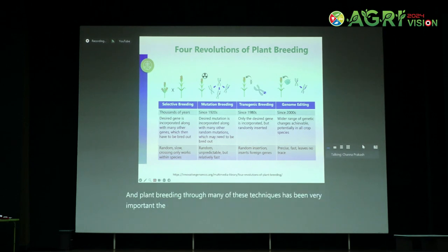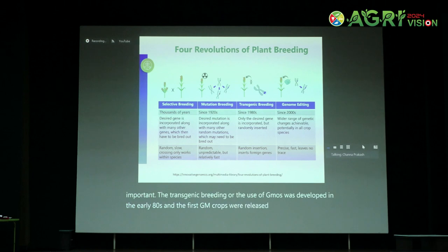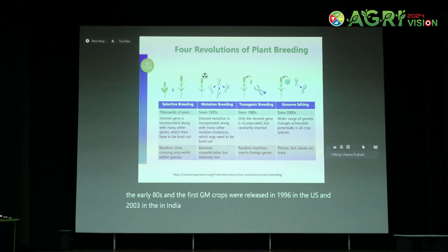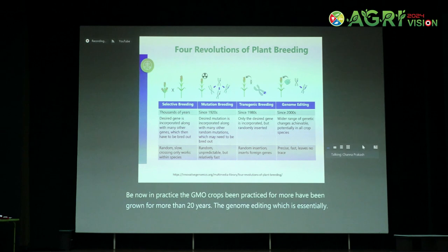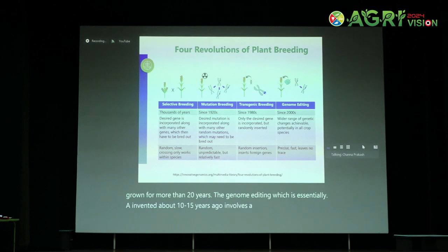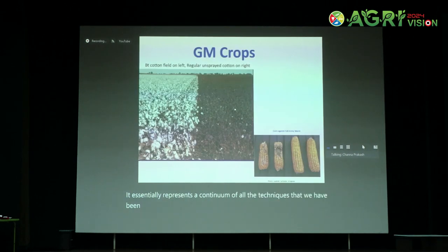Transgenic breeding or the use of GMOs was developed in the early 1980s, and the first GM crops were released in 1996 in the US and 2003 in India. GM crops have been grown for more than 20 years. Genome editing, which was essentially invented about 10 to 15 years ago, represents a continuum of all the techniques that we have been using. BT cotton is the only GM crop grown in India.